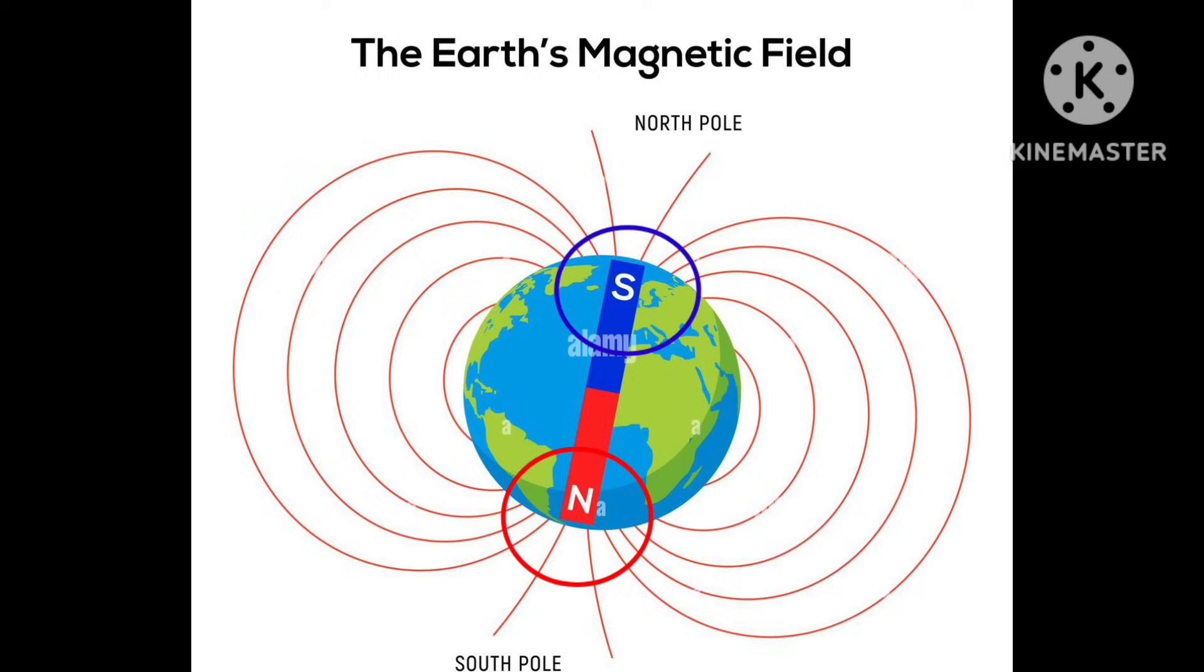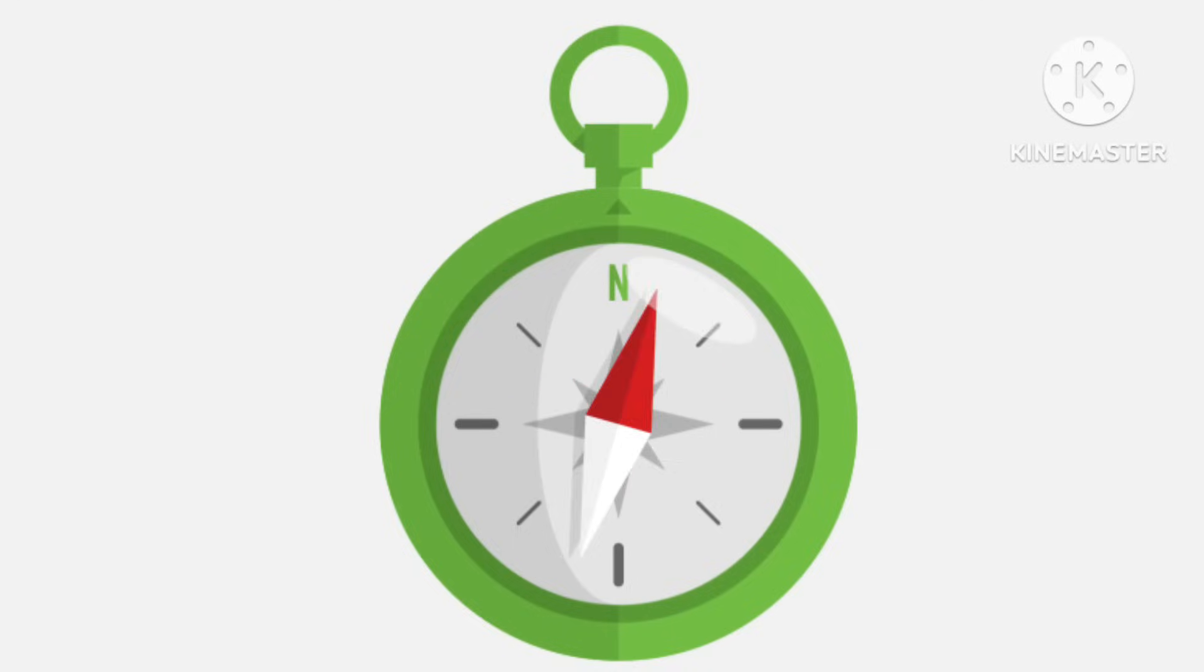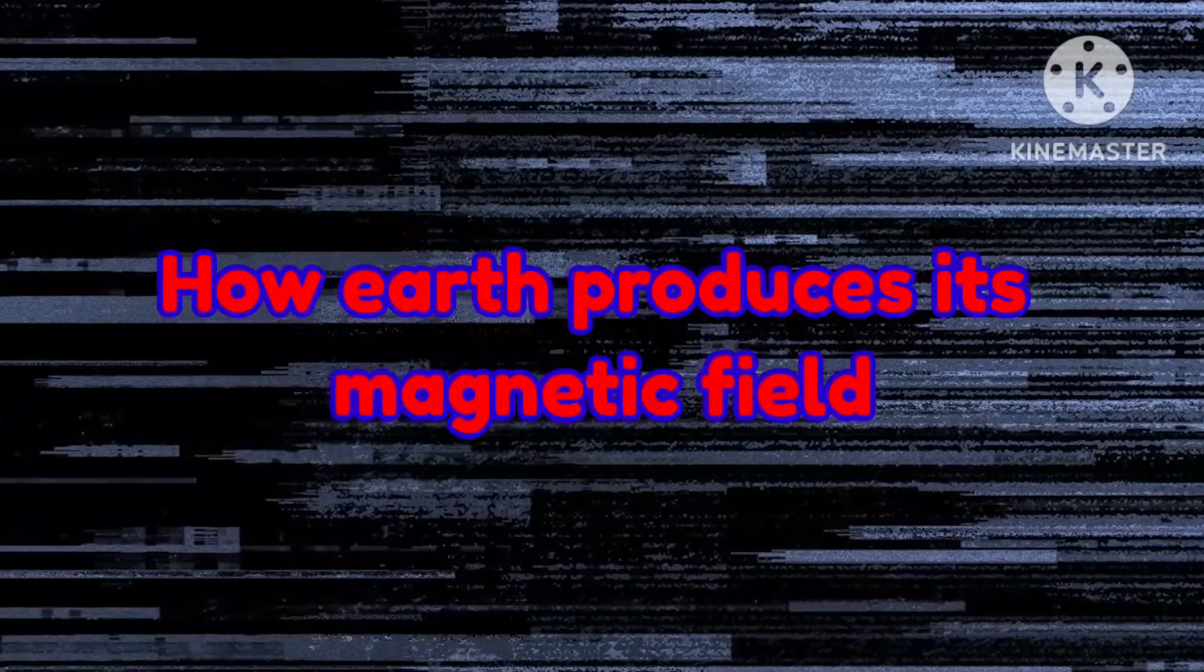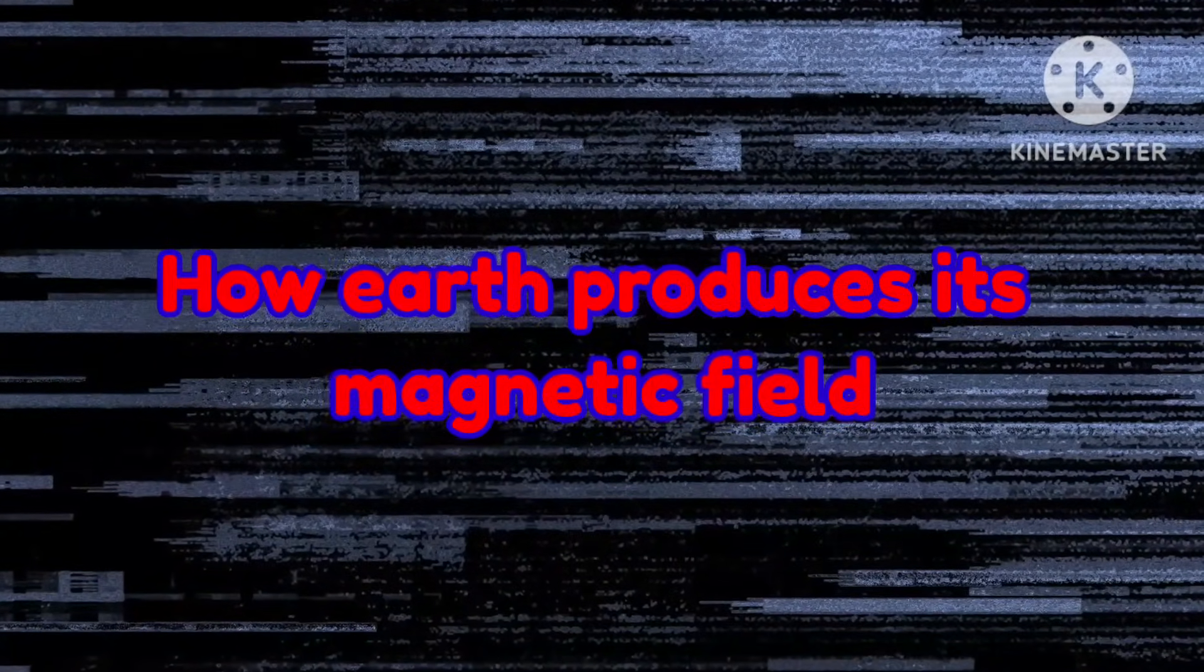And a south magnetic pole found close to the geographic north pole. Earth's magnetic field is the reason why a compass works in navigation. Now let's see how Earth produces its magnetic field.